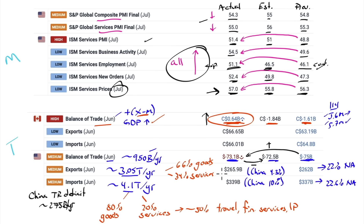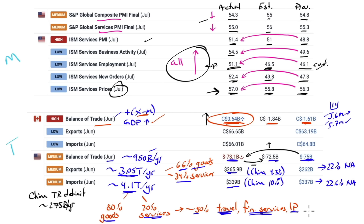Here you have a trade deficit of $73 billion, but it's made up of exports and imports. Exports per year out of the US is about a $3 trillion business; imports $4 trillion. The exports are made up of about 66% goods and 34% services. Imports are primarily goods - 80% goods, 20% services. And of those services, 50% come from travel, financial services, and IP. Travel means you're a US citizen taking a vacation in Europe or China - that is an import, because you're importing that experience.